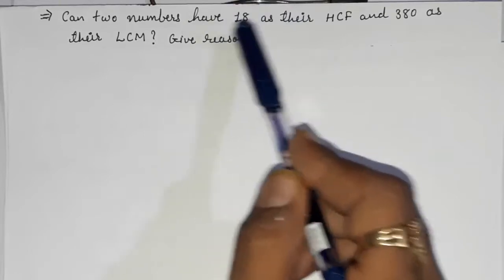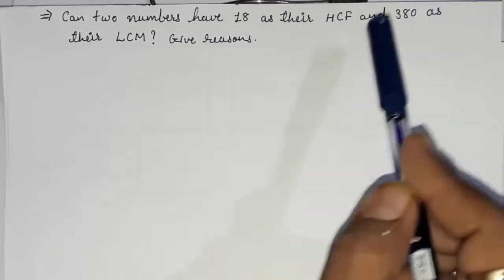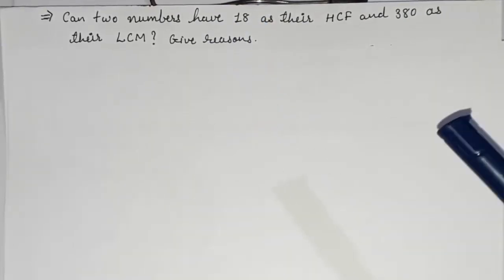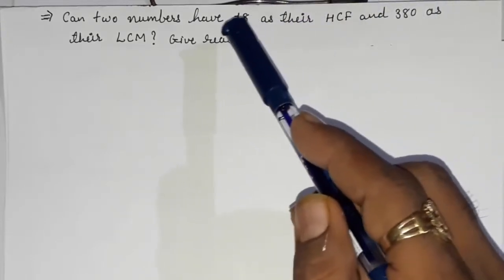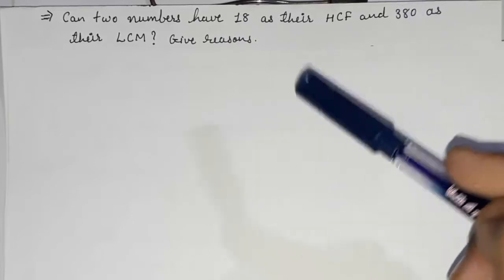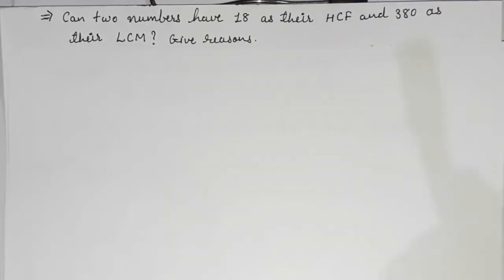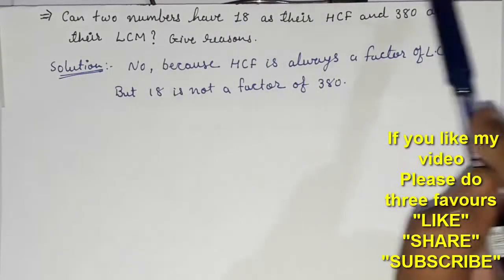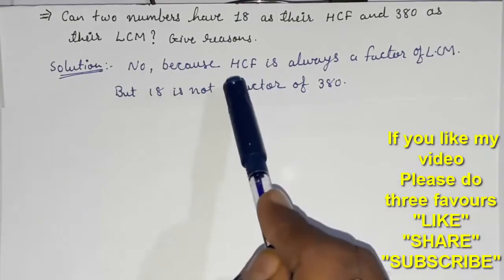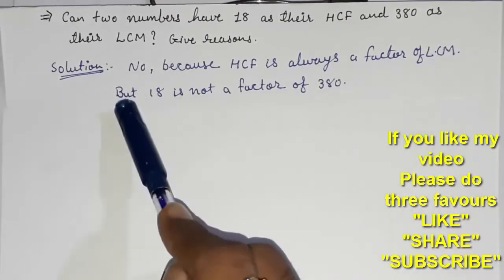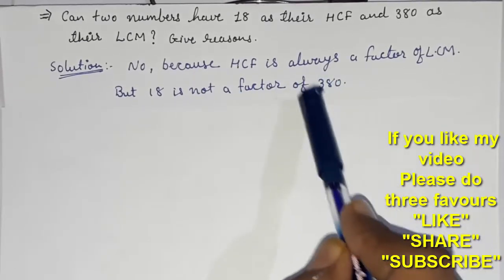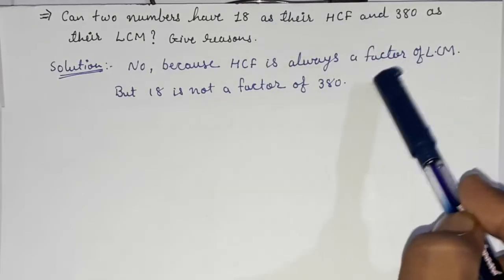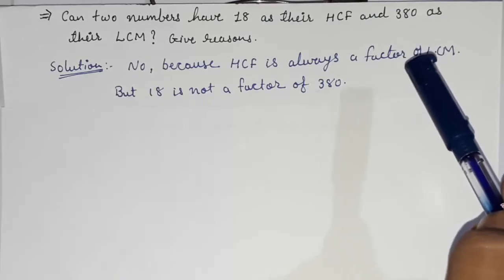We know that all the factors of the HCF should always be present in the LCM. So if we divide 380 by 18 and get remainder zero, then 18 and 380 are possible as HCF and LCM. But here, dividing 380 by 18 does not give remainder zero — so no, because HCF is always a factor of LCM, but 18 is not a factor of 380. This is not possible.